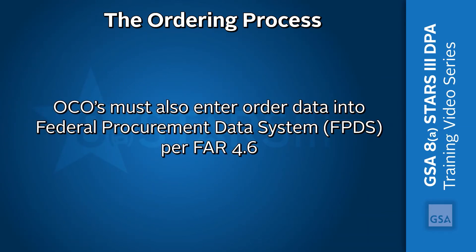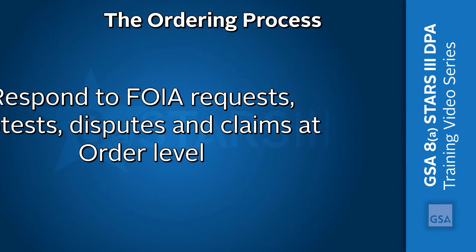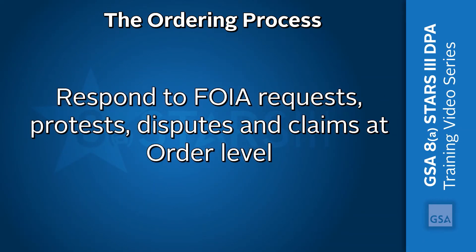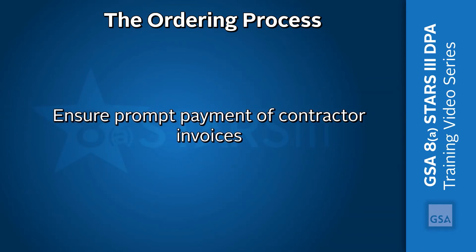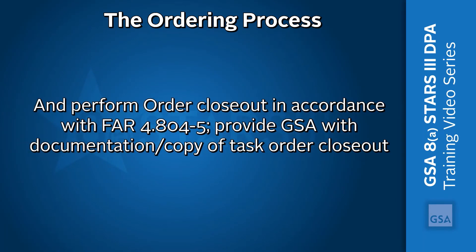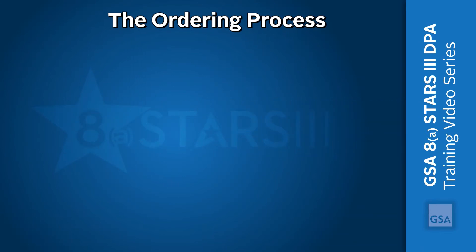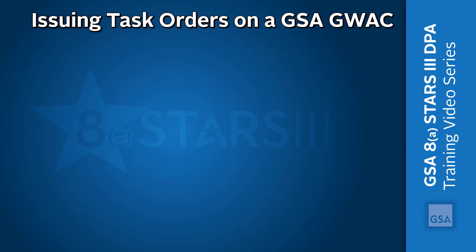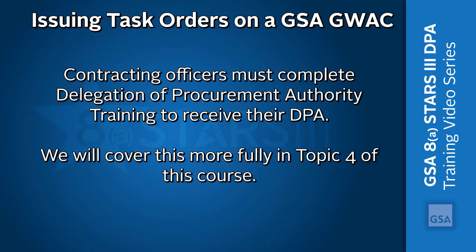OCOs must also enter order data into the Federal Procurement Data System, FPDS, per FAR 4.6; respond to FOIA requests, protests, disputes, and claims at the order level; ensure prompt payment of contractor invoices; provide a complete copy of the task order and subsequent modifications to S3 at gsa.gov; and perform order closeout in accordance with FAR 4.804-5. Before issuing task orders on a GSA GWAC, Federal Contracting Officers must complete training and receive a Delegation of Procurement Authority, or DPA. A warranted contracting officer becomes an OCO after obtaining a DPA.